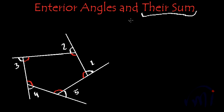How do we find the sum of the exterior angles? One method is to derive the formula. If you see all these points — this point, this point, this point, this point, and this point — these are the vertices of the polygon. At every vertex, we have a pair of one interior angle and one exterior angle.